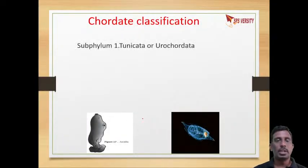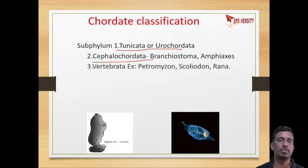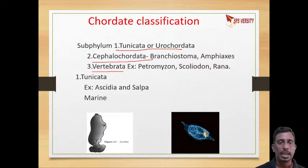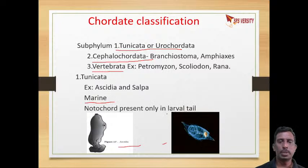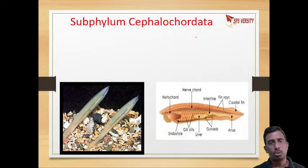When we come to Chordata classification, it is divided into three phyla: Tunicata (also called Urochordata), Cephalochordata, and Vertebrata. In Tunicata the body is covered by tunicin. Examples are Ascidia and Salpa, which are mostly marine. The notochord is present only in the larval tail region.